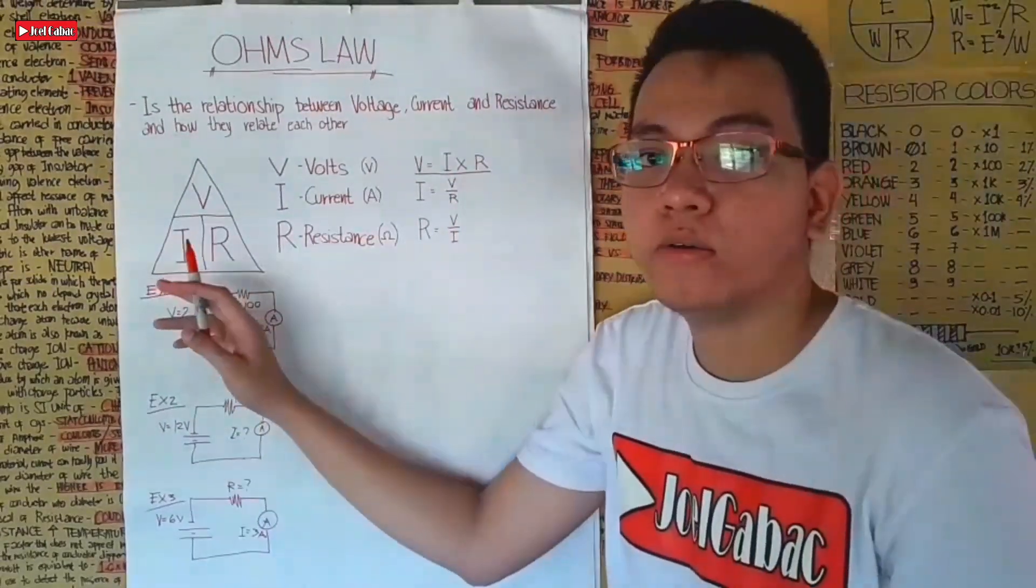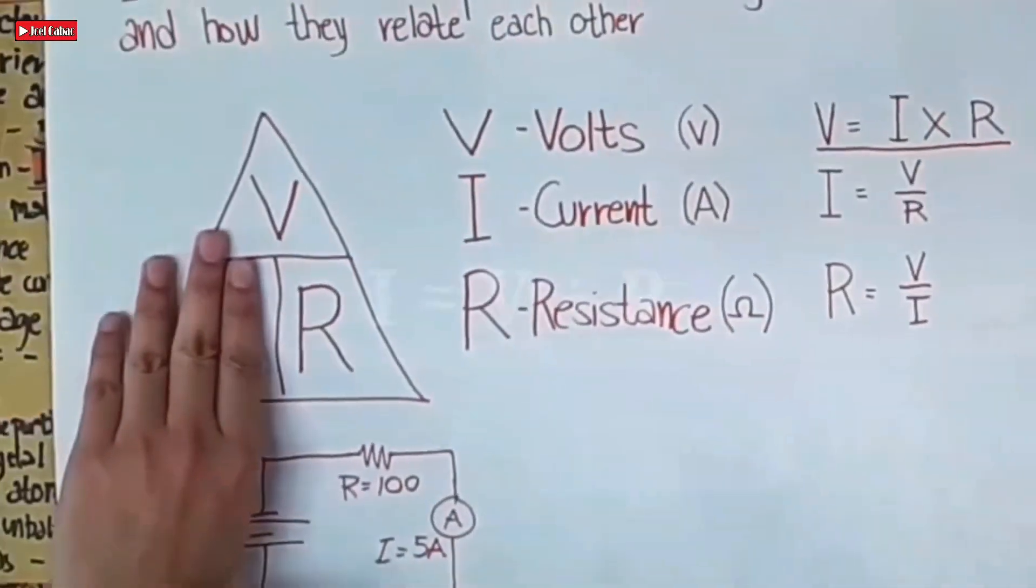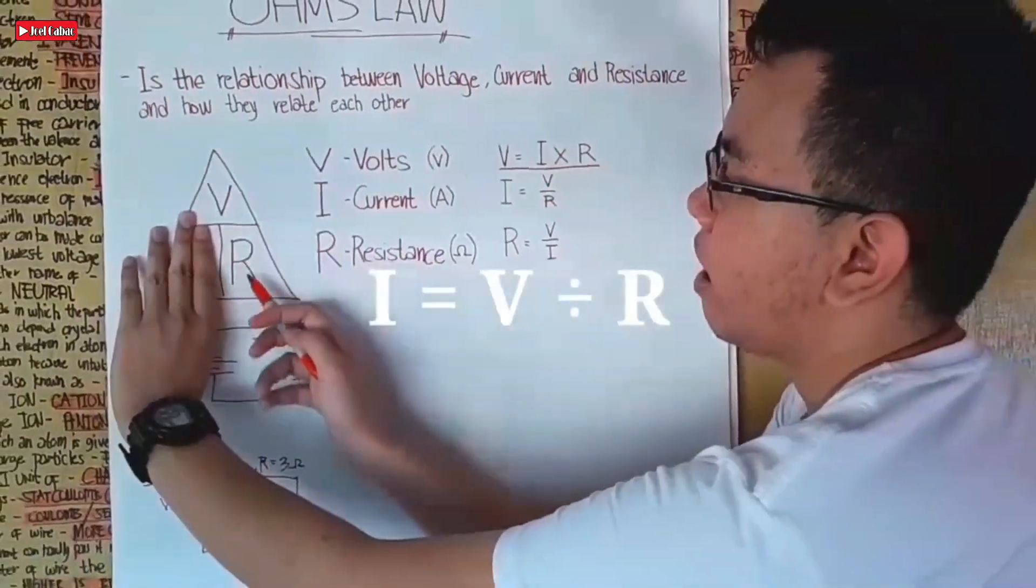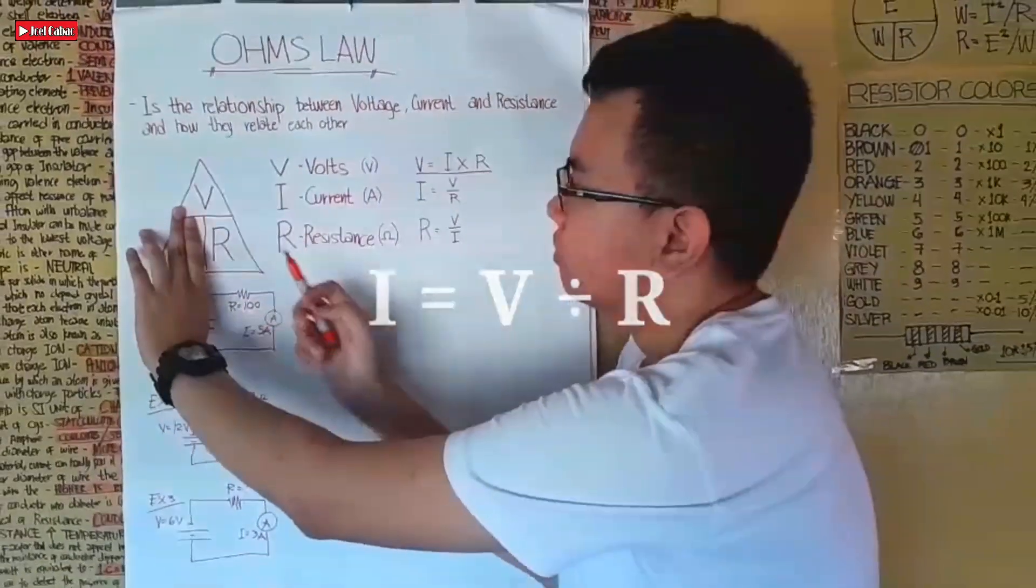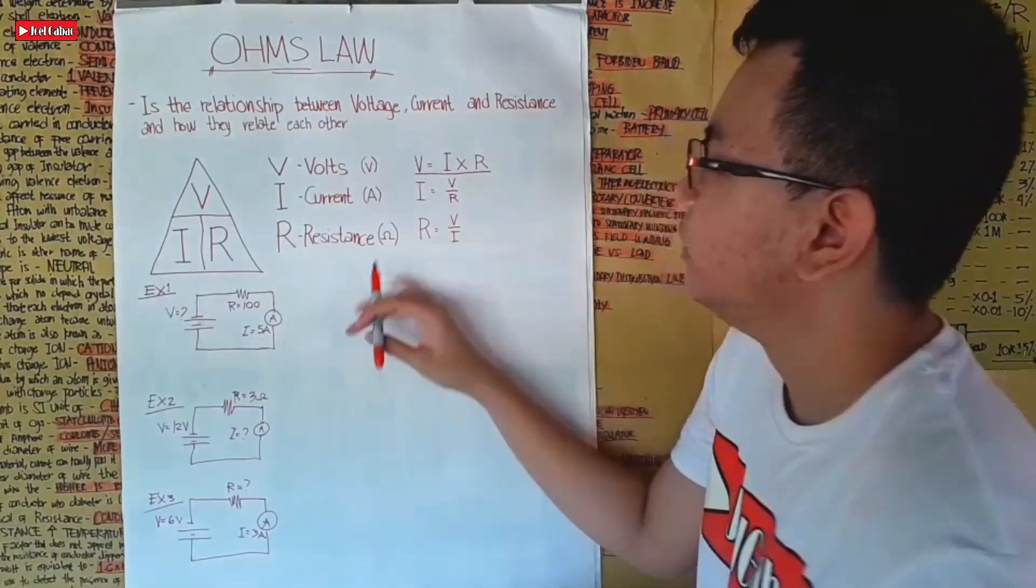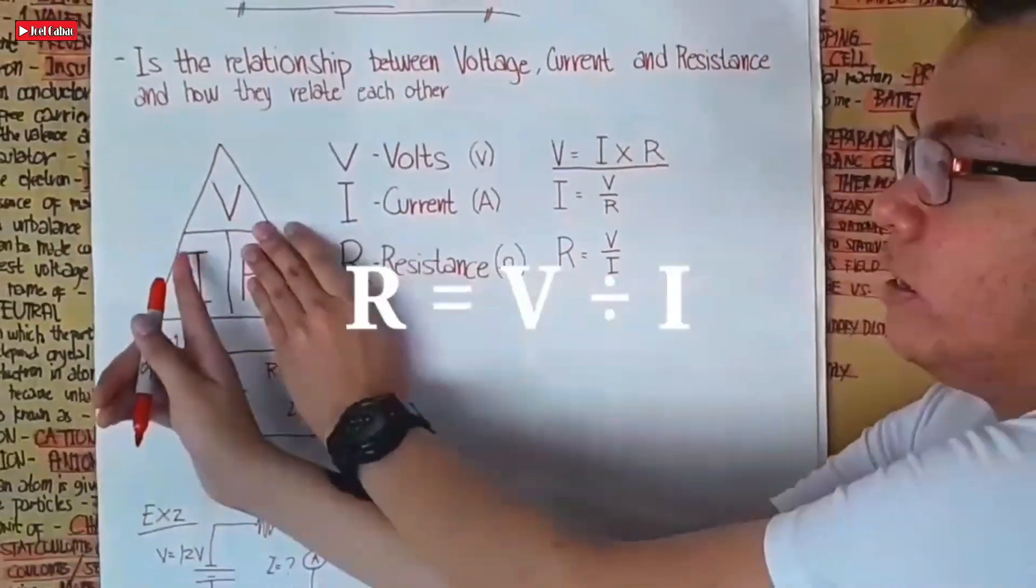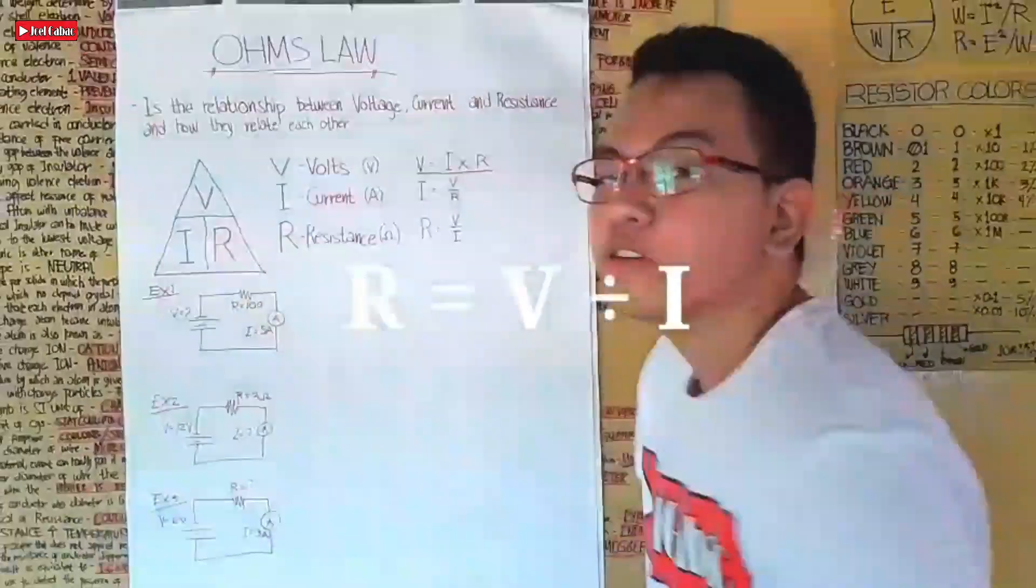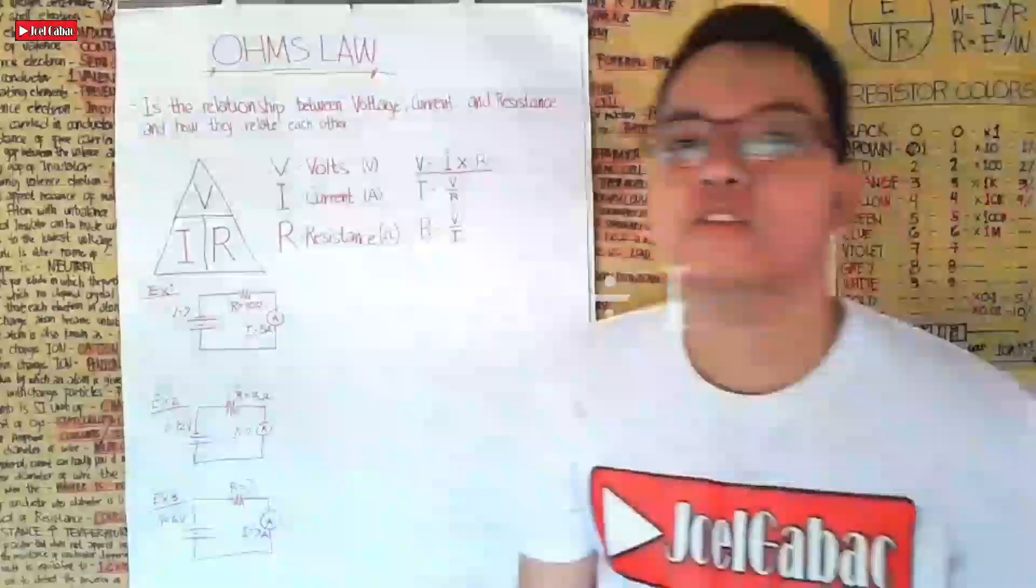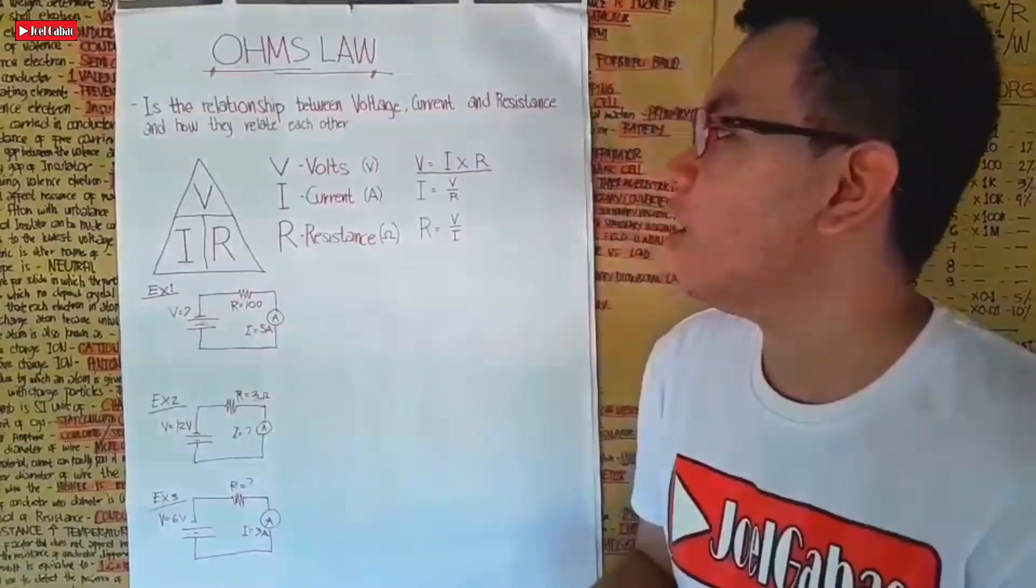If you cover I or current, the formula is like this: I is equal to V over R. And for resistance, R is equal to V over I. It's that easy to get the formula from this Ohm's Law triangle.